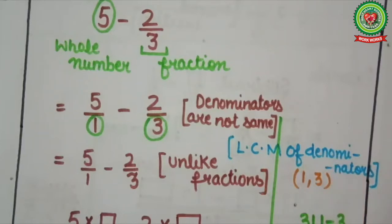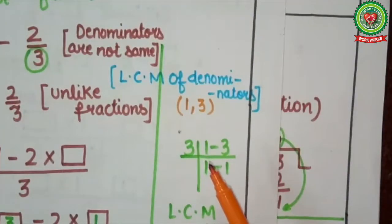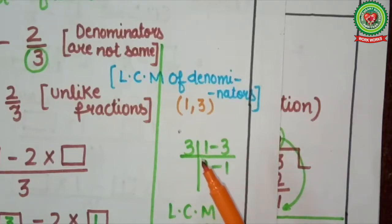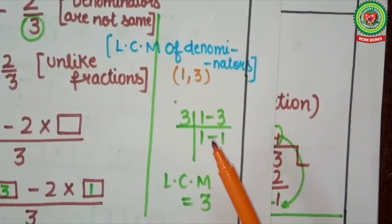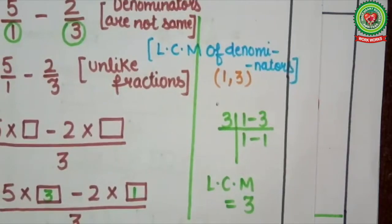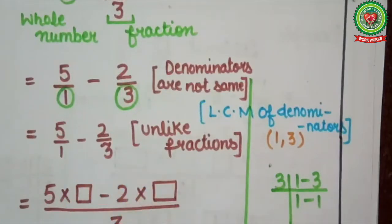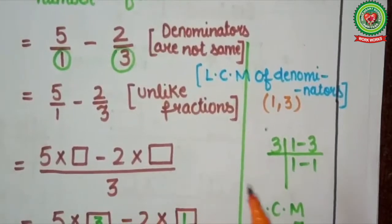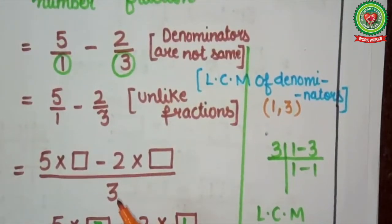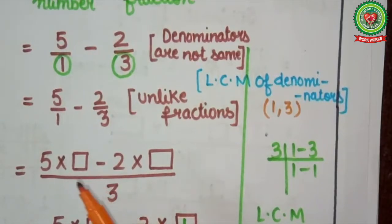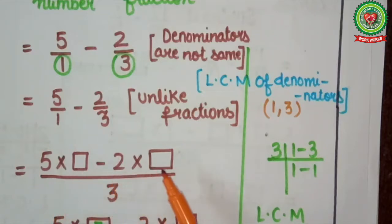Next step: LCM of denominators. Here denominators are 1 and 3. When we use the antenna method to find out the LCM of 1 and 3, it will come directly 3. Why? Because 1 is not a prime number, so if we take the LCM of any number with 1, it will come as the same number. Next step: change these fractions into like fractions. For that, we take a common denominator. Here the common denominator equals the LCM, which is 3. So in the denominator I will write 3, and multiply numerators with a suitable number so that their denominators become equivalent to 3. Here I will write 5 into box minus 2 into box upon 3.